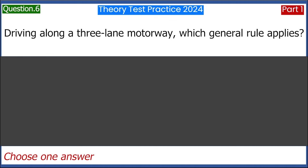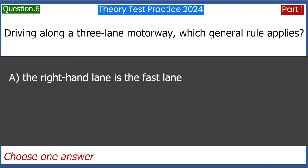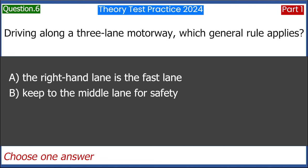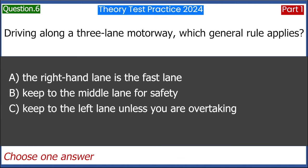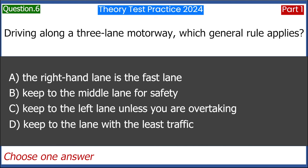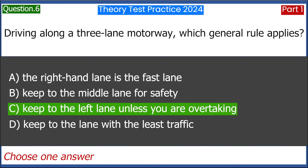Driving along a three-lane motorway. Which general rule applies? A. The right-hand lane is the fast lane. B. Keep to the middle lane for safety. C. Keep to the left lane unless you are overtaking. D. Keep to the lane with the least traffic. Answer: C. Keep to the left lane unless you are overtaking.